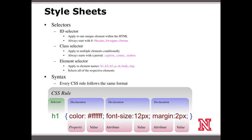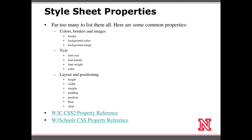Selectors are also important to understand. There are way too many properties to list, but some of the more common ones deal with borders, colors, and images — such as border, background-color, background-image, or just background. For text there are font-size, font-family, and font-weight, which deals with bold or regular. And then of course color.